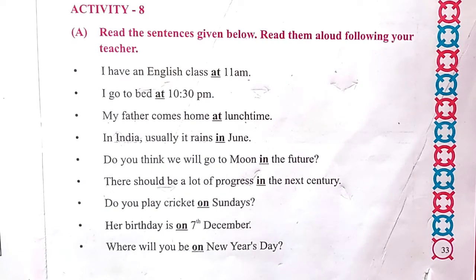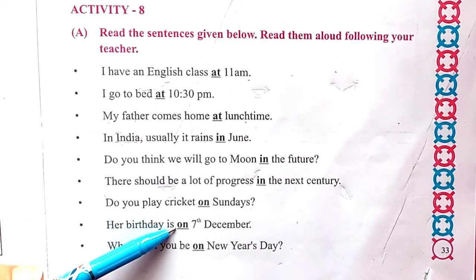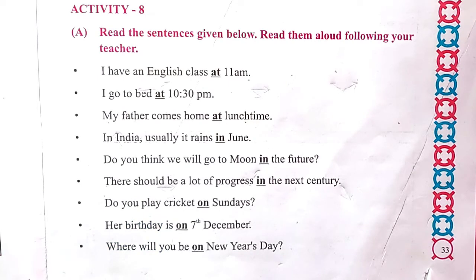So children, all these sentences are written with 'at', 'in', and 'on'. 'At' is used for specific points — for example, at the corner, at 11, at the zoo, at the top, at the bottom.